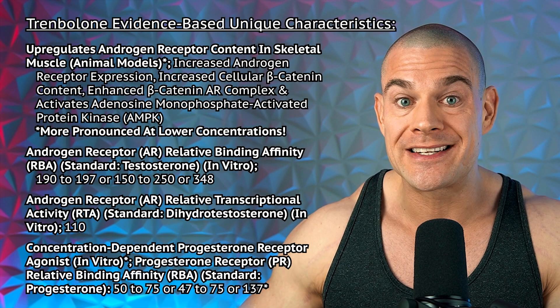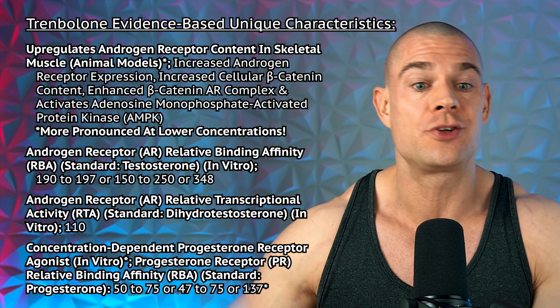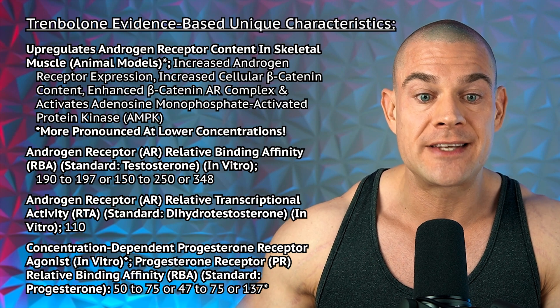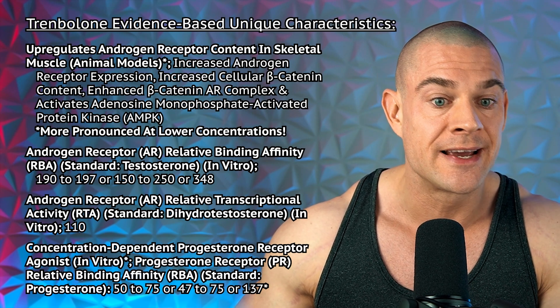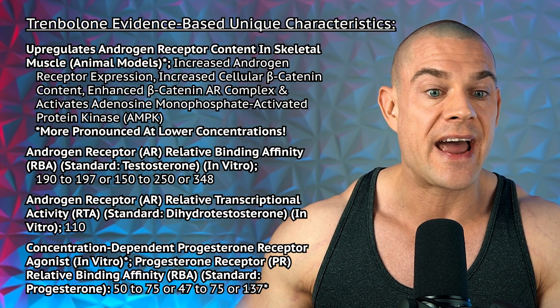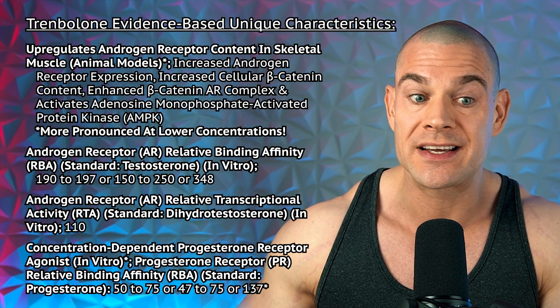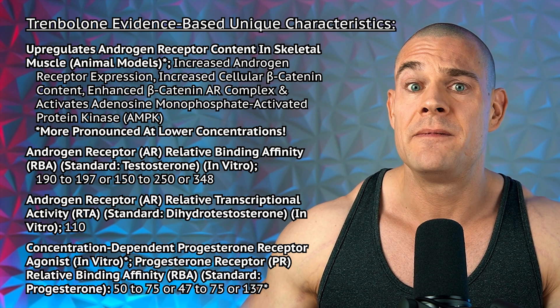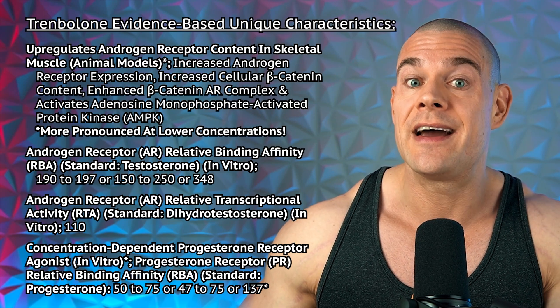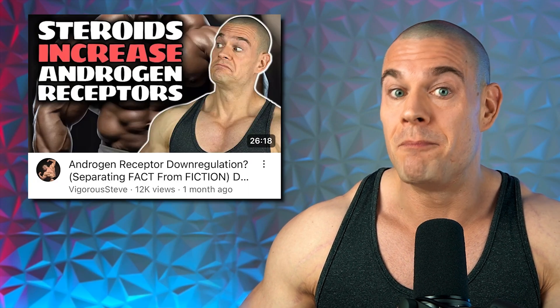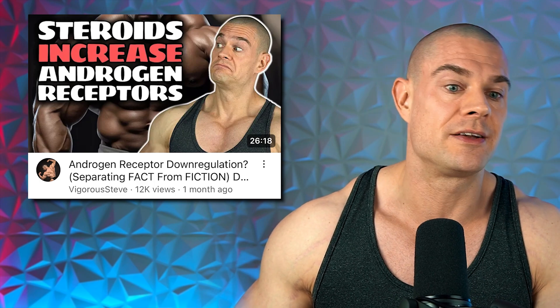Training or not, Trenbolone upregulates the androgen receptor content of skeletal muscle, increasing androgen receptor expression, cellular beta-catenin content, and enhancing beta-catenin androgen receptor complexes. This activates AMPK — adenosine monophosphate-activated protein kinase. But this effect is more pronounced at lower concentrations, providing more evidence that more Trenbolone might not be better, at least regarding androgen receptor content of skeletal muscle.